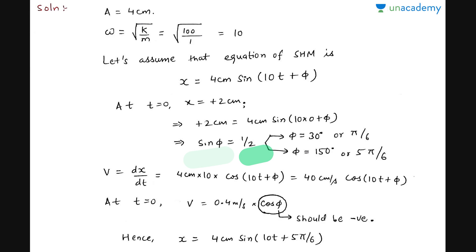Two values of φ are possible: π/6 and 5π/6. At t = 0, x is equal to +2 cm. We get sin φ = 1/2, so φ is either 30° or 150° — that is, π/6 or 5π/6. Additional information is needed to determine which value is correct.